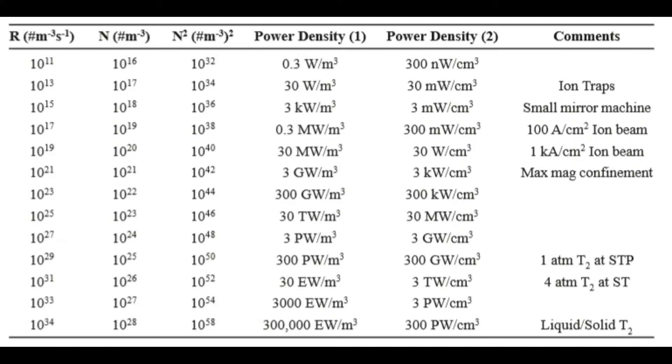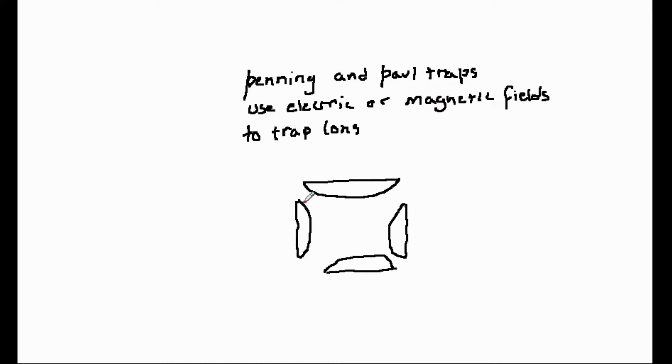The reason for this low density is the difficulty in containing the plasma ions. State-of-the-art ion traps, called the Penning and Paul traps, can only contain about 10 to the 17 ions per cubic meter. And the incoming accelerated ion density is usually much less than this.